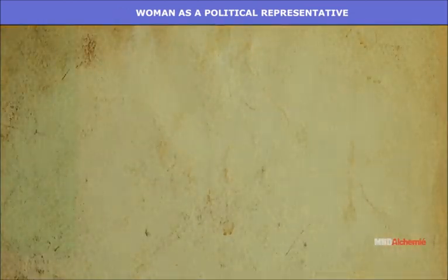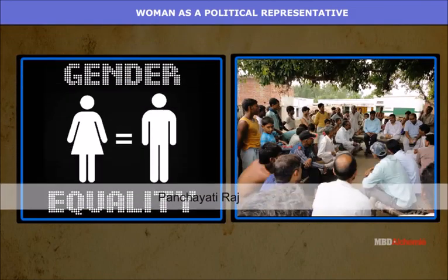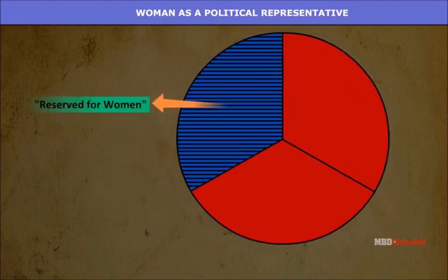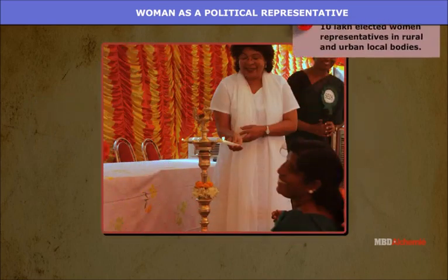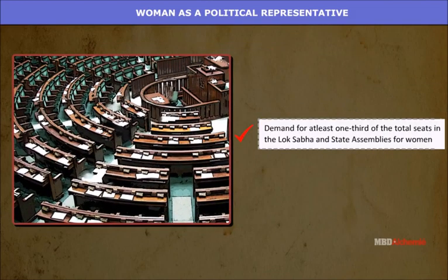To solve this problem, women's participation should be legally binding to ensure a fair proportion of women. As in the Panchayati Raj, one-third of seats in local government bodies — panchayats and municipalities — are now reserved for women. There are now more than 10 lakh elected women representatives in rural and urban local bodies.